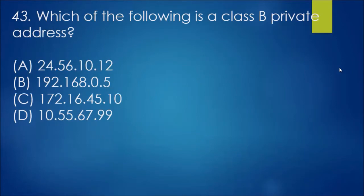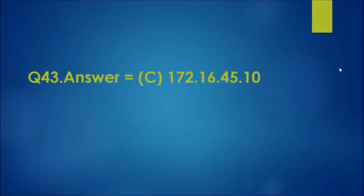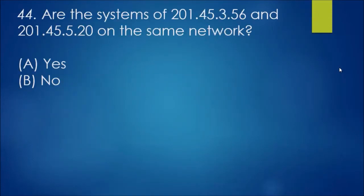Question 43: which of the following is a class B private address? Again, what is after class A? It's after 127 but also before 191 or 192 I should say. So if we look at this, the answer looks to be C. A and D would be in class A, and answer B is actually class C. So the answer should be C: 172.16.45.10.